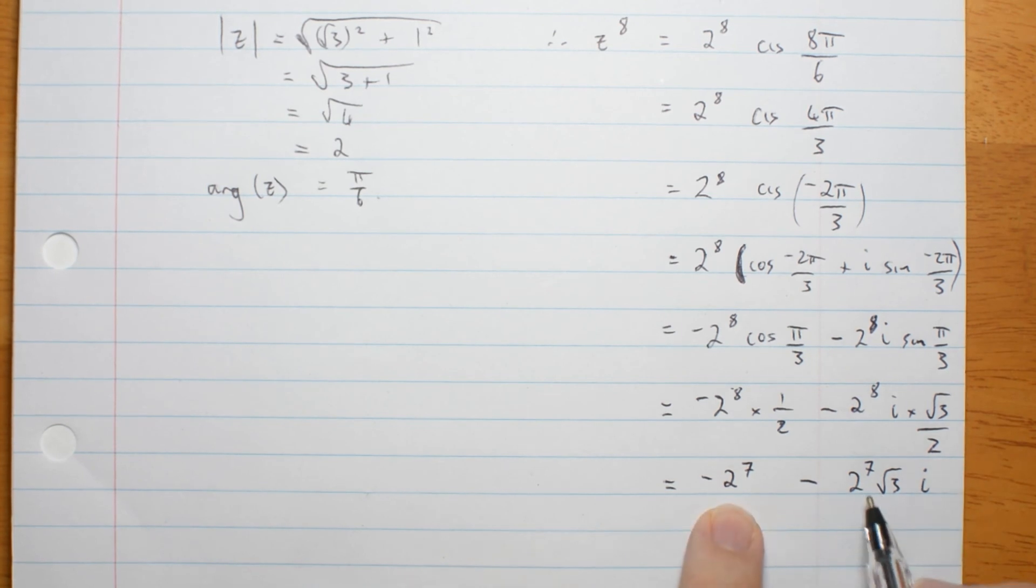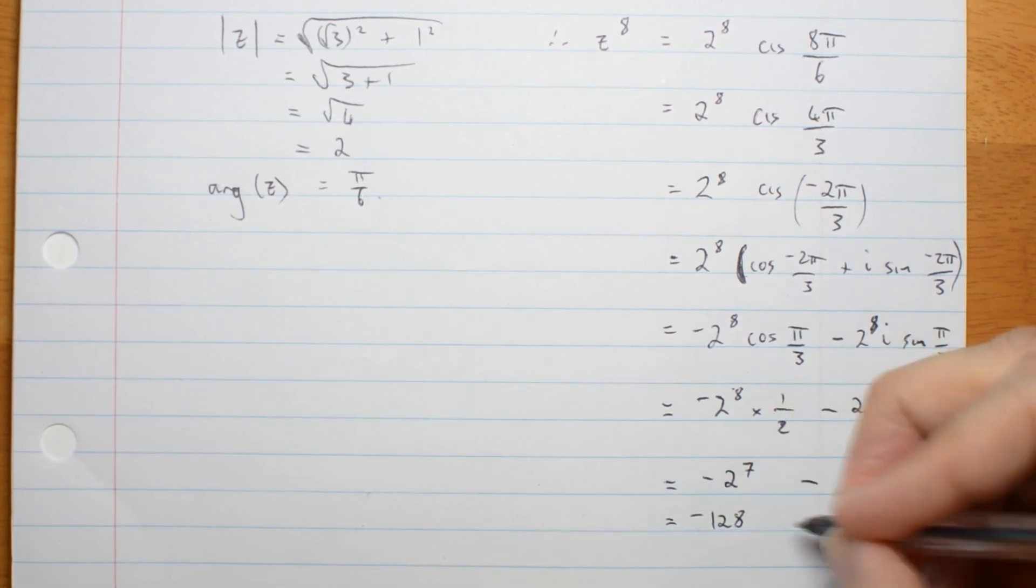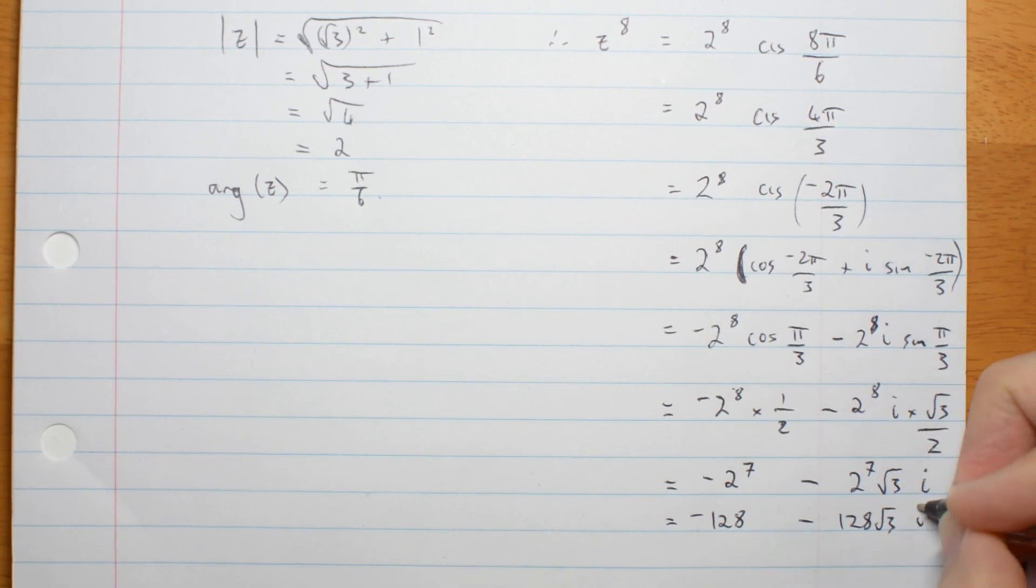And here is where I think maybe it's worth replacing these with numbers. 128 minus 128 root 3 i. And make sure your i's are well outside the square root. If it's not too clear from the way you write, put the i in front instead.